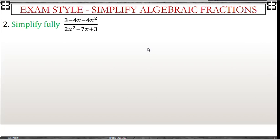We begin the same by factorizing each expression. Now you've got to be very careful here. So this is negative 4x squared.